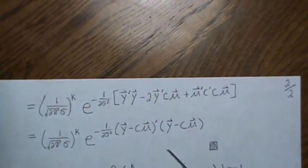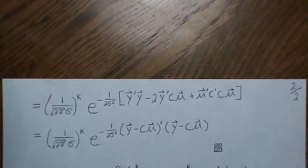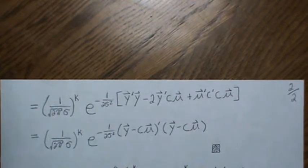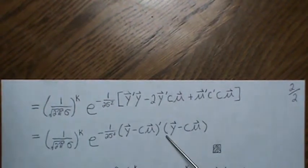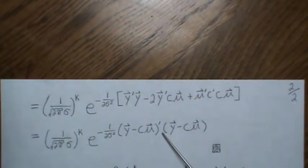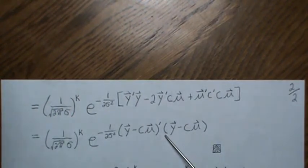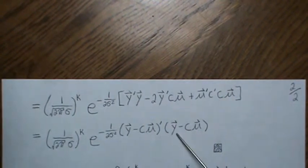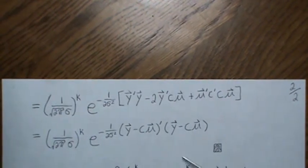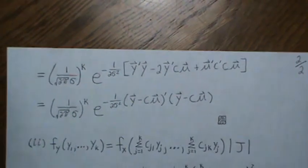We're finished with the vector notation derivation. The result is a multivariate normal distribution, so the Y's are jointly multivariate normal. The variance-covariance matrix is the identity matrix, meaning all off-diagonal entries are zero, which tells us the Y's are independent.